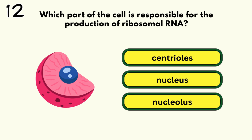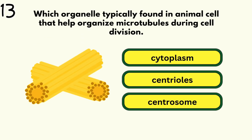Number 13. Which organelle typically found in animal cells helps organize microtubules during cell division? Centriole.